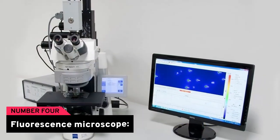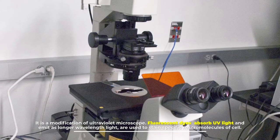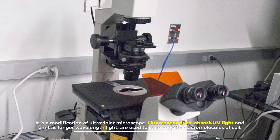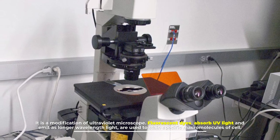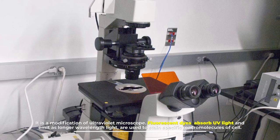Number four: fluorescence microscope. It is a modification of ultraviolet microscope. Fluorescent dyes absorb UV light and emit as longer wavelength light are used to stain specific macromolecules of cell.